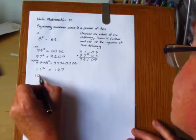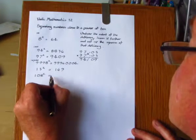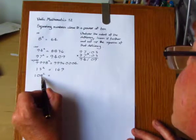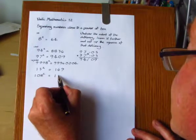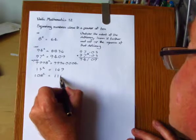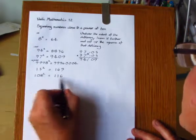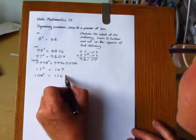Another example, 108 squared. Here the surplus is 8. So we increase 108 by that, making 116. And then put down the square of the surplus, which is 64.